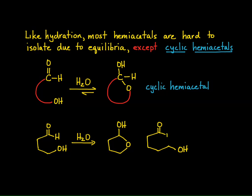Extending the chain by one carbon — now I have five carbons with an alcohol at the end and an aldehyde. Dissolving this in water, it's going to cyclize to give this particular hemiacetal. Recognize what a hemiacetal is: that carbon has an ether linkage and it has an OH linkage. So whenever you see a carbon that has an ether and an OH, that is called a hemiacetal. And hemiacetals are reversible — you can get back the aldehyde and the alcohol.